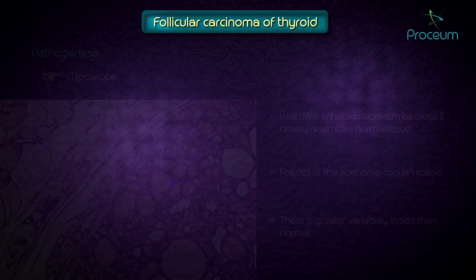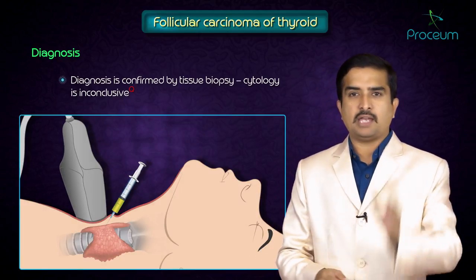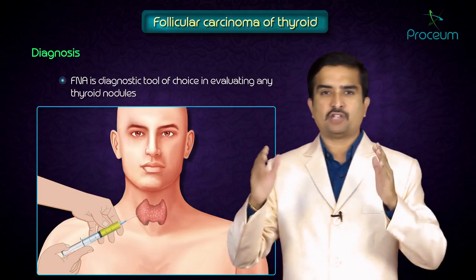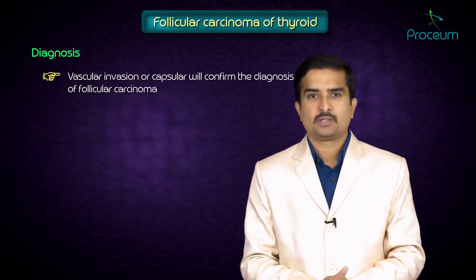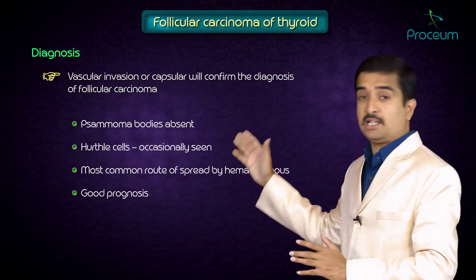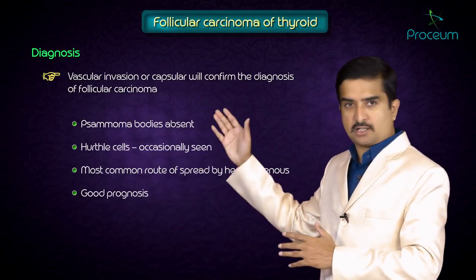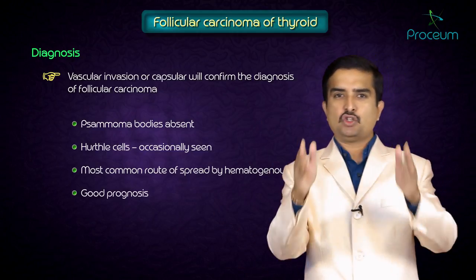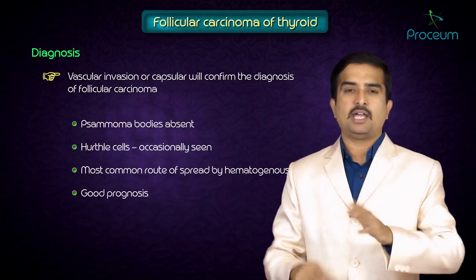After discussing gross and histopathology, let us discuss diagnosis. The diagnosis is confirmed by tissue biopsy where cytology is inconclusive. Fine needle aspiration is the diagnostic tool of choice for evaluating thyroid nodules. Vascular invasion or capsular invasion will confirm the diagnosis of follicular carcinoma. Note that psammoma bodies are absent, and Hurthle cells are occasionally seen but not in all cases. The most common route of spread is hematogenous, and follicular carcinoma of the thyroid has a very good prognosis.